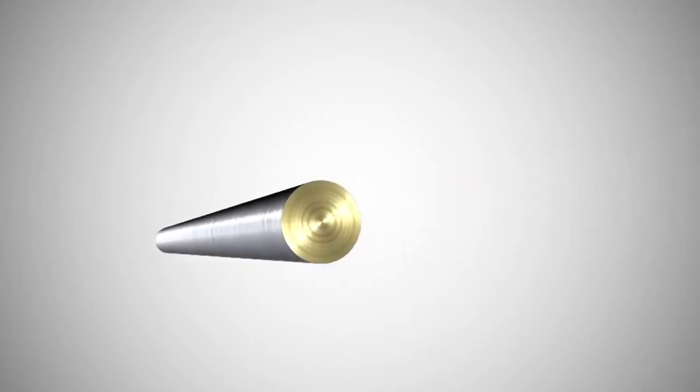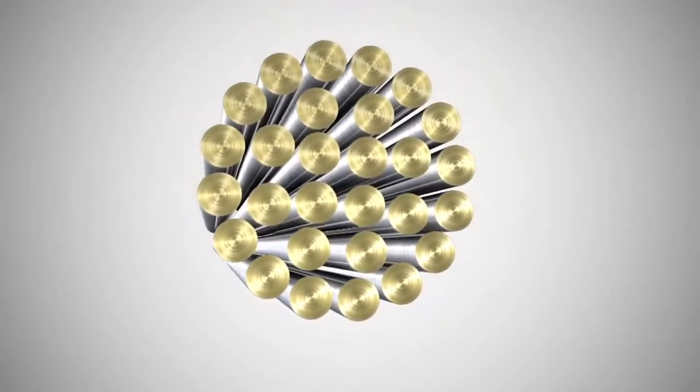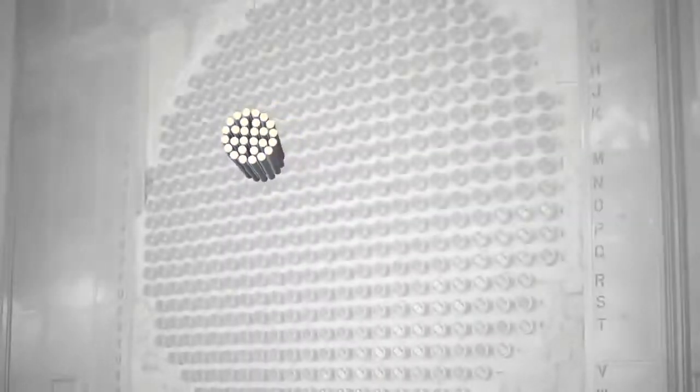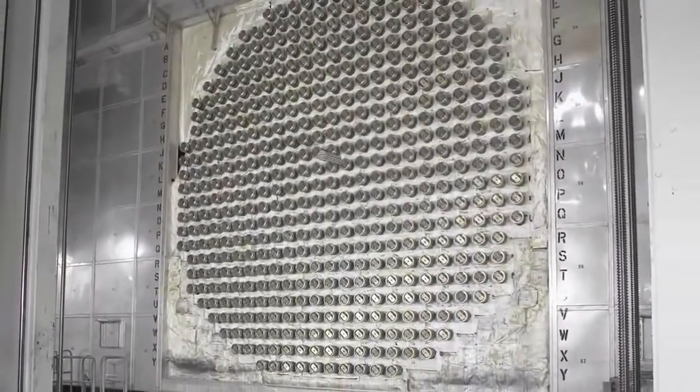The pellets are sealed into metal tubes, which are welded together to form a fuel bundle. The fuel bundles are then inserted into a large tank called a calandria, which is the heart of the nuclear reactor.